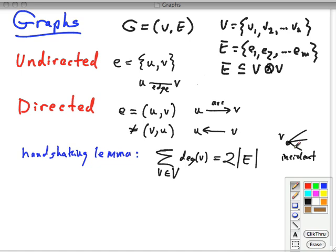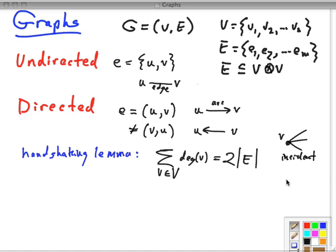In the directed version we may have in incident and out incident. This has two edges that are in incident, and it has an in degree of 2. This has three edges that are out incident, and it has an out degree of 3.